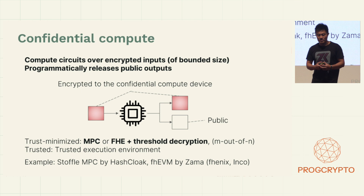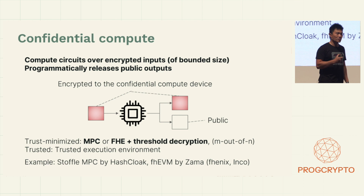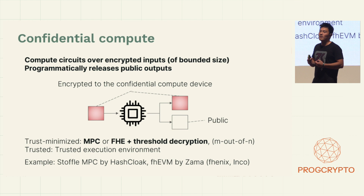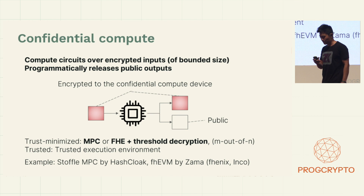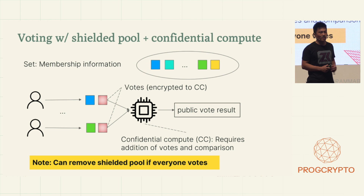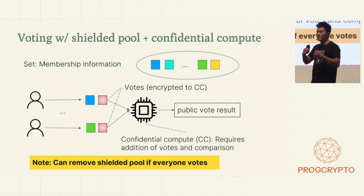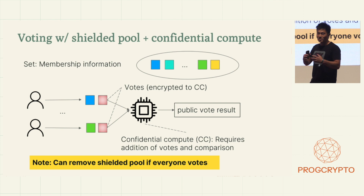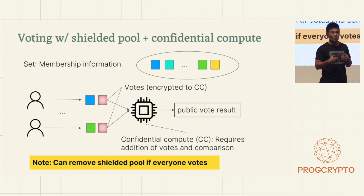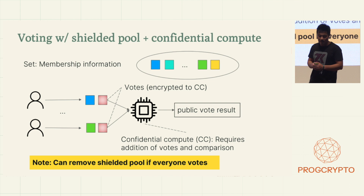This can be realized using MPC with threshold-type assumptions. With FHE, this becomes more efficient if you have a larger set of nodes. Recently we've seen examples of this — for example, FHE-EVM by Zama is such a system. For voting, alongside proving you have a stake so you can vote, you can also encrypt your vote to this system. The confidential compute unit will simply aggregate all the votes privately and release a public result of the ballot. In this way, you can get privacy for stake-based voting, with some added trust assumptions.